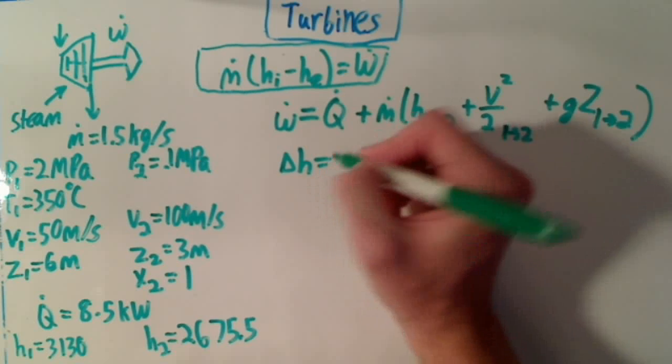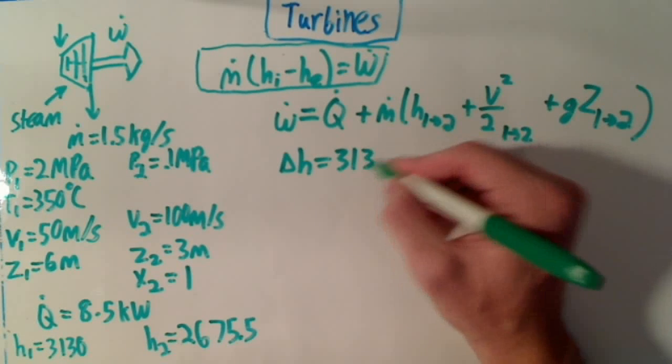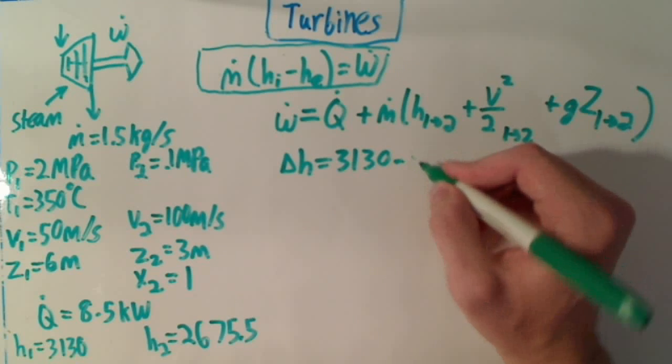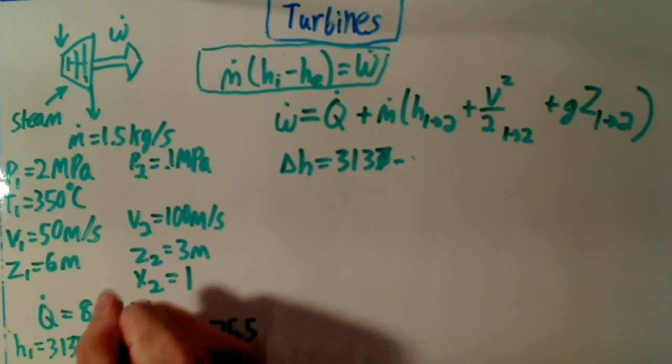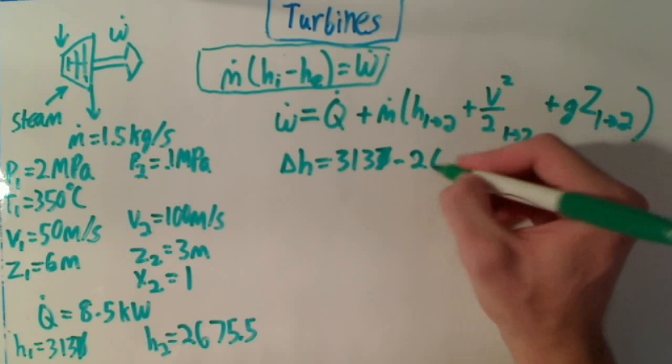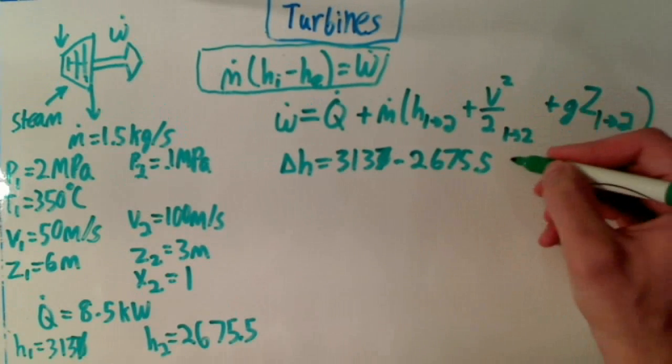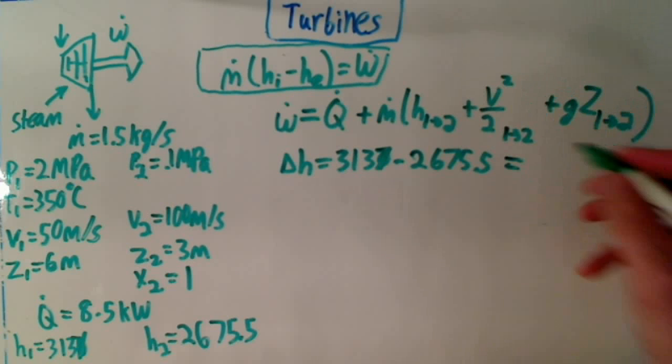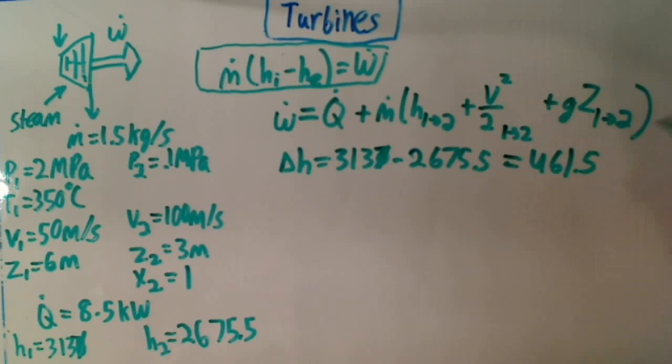So delta enthalpy will just be 3,130 minus, actually not 30, it should be 37. I don't know why I wrote 30. Minus 2,675.5, that equals 461.5 kilojoules per kilogram.